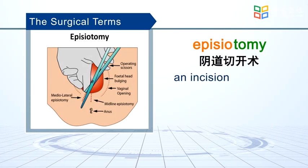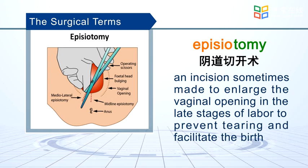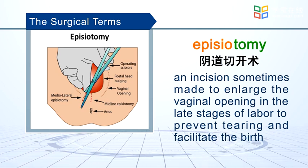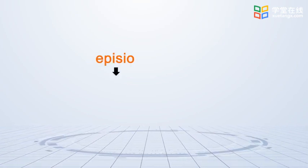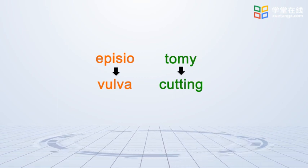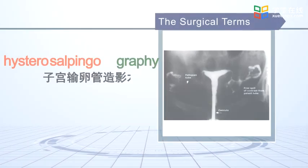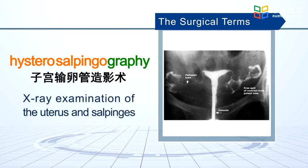Episiotomy: an incision sometimes made to enlarge the vaginal opening in the late stages of labor, to prevent tearing and facilitate the birth. Hysterosalpingography: x-ray examination of the uterus and salpinges.